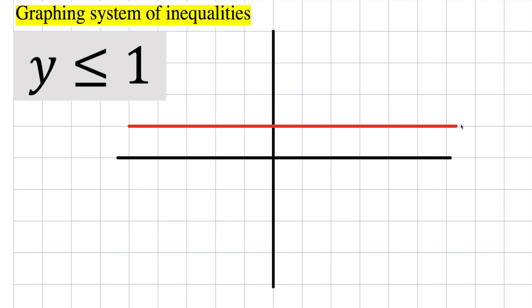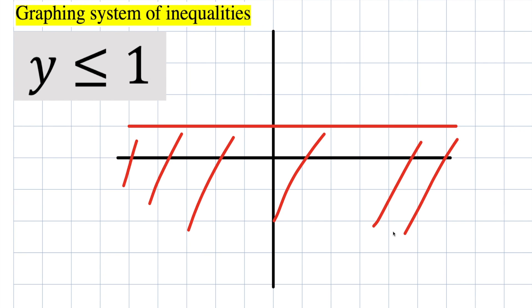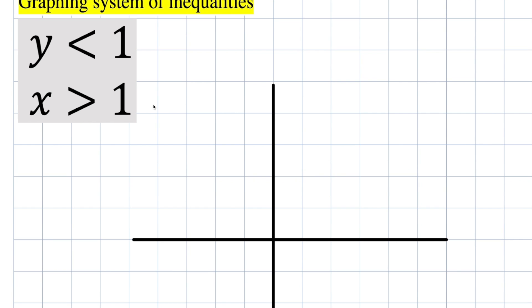But we're not done yet. This is an inequality — it's saying that y is less than or equal to 1, so it's going to be everything below. Pretty much all of this region right here would be our answer.